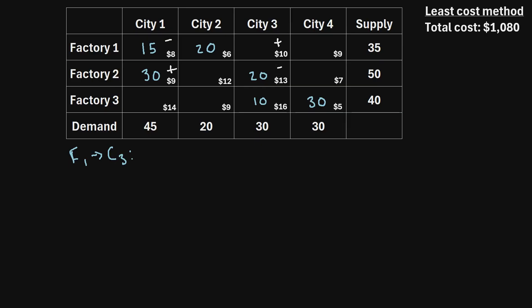We look at the unit shipping costs and add them according to their plus or minus signs. So we calculate 10 minus 8 plus 9 minus 13, which turns out to be negative 2. We then repeat that process for every unallocated cell in the table.